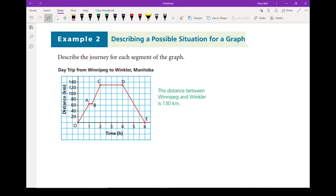Example number two is describing what's happening in a graph. So what is the story that goes behind with this picture? We've got a day trip from Winnipeg to Winkler, Manitoba. I've got a little note here on the side saying the distance between Winnipeg and Winkler is about 130 kilometers. On the x-axis, we've got time, and on this distance, we've got distance. But that's distance from home. So I'm going to put a little note here: Distance from home. And in this case, home is Winnipeg.